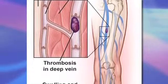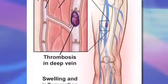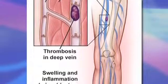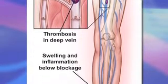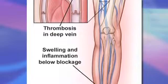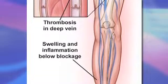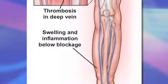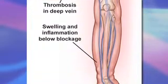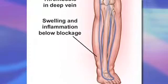If the valves are not working, the blood flows backwards and pools in the legs. This leads to increased pressure and venous distension, known as venous reflux or insufficiency.